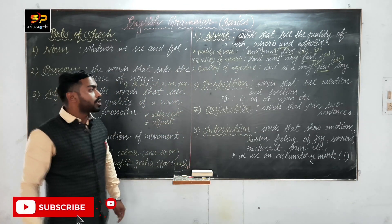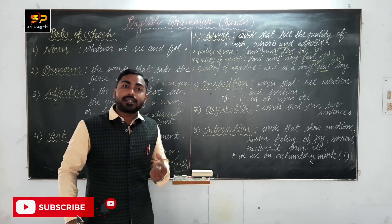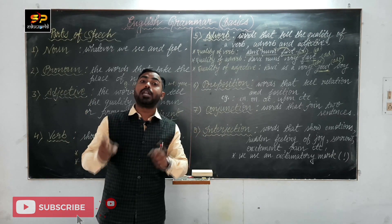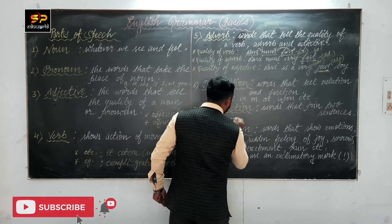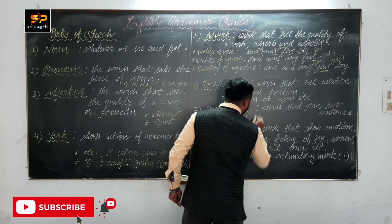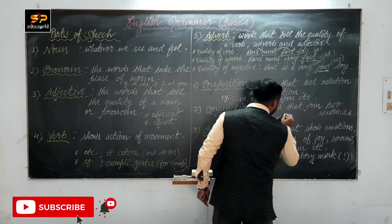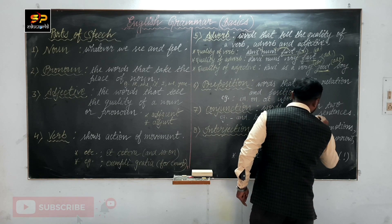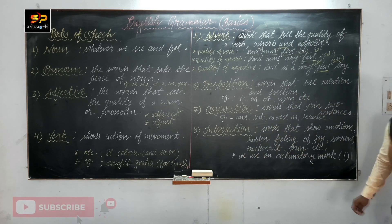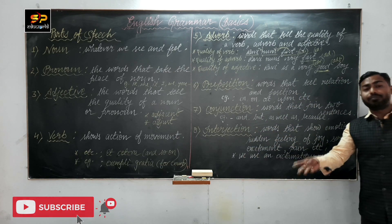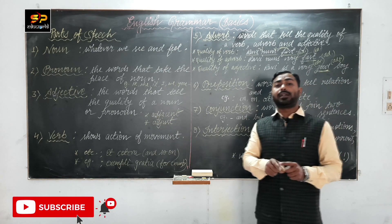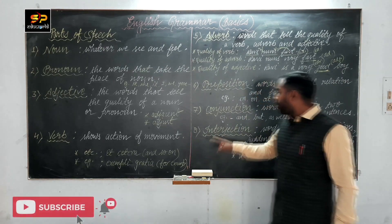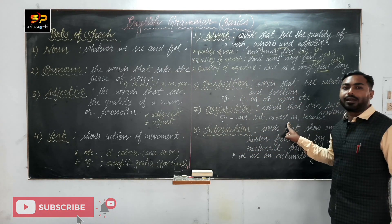Conjunction — conjunctions are also called linkers or connectors. The words that join two sentences are called conjunctions. Examples: and, but, as well as, because. There are many such words — the words that join two sentences are called conjunctions.